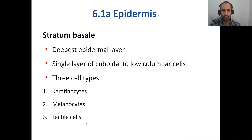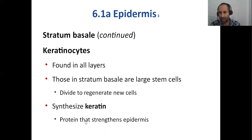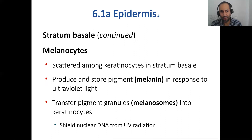Three types of cells are found in your basal layer: keratinocytes, melanocytes, and tactile cells. Keratinocytes make keratin — the tough protein that gives resilience and youthful appearance to your skin. Melanocytes make the protein melanin, which gives skin color.